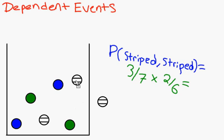Now we multiply our two fractions. Three sevenths times two sixths equals six out of forty-two. Now we need to reduce. It's one seventh. How cool!